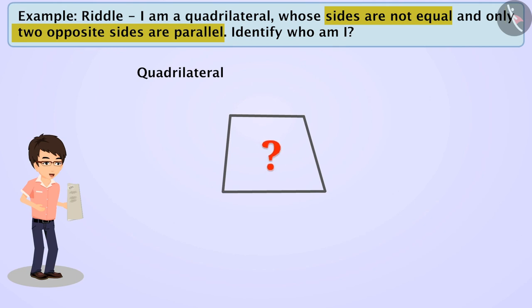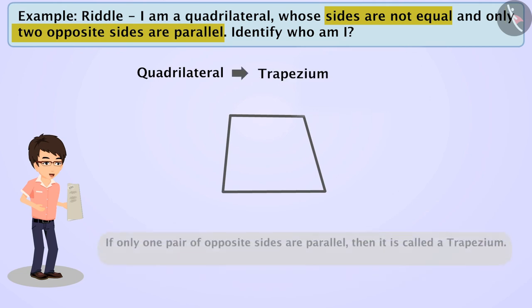Which quadrilateral is this? This is a trapezium. If you know the properties, then it is not necessary to draw the figure — on the basis of the properties, you can say that this is a trapezium.